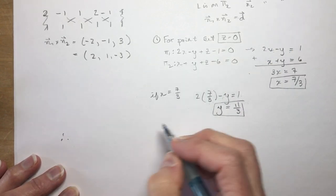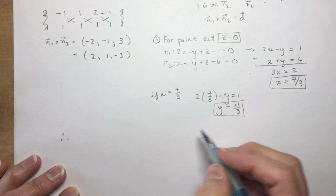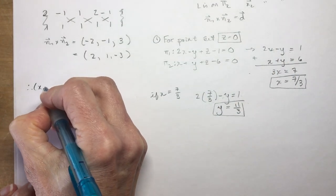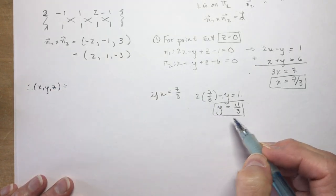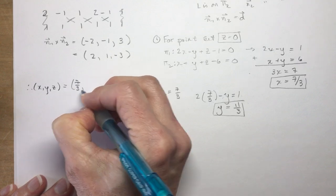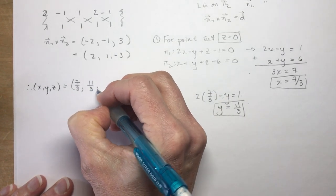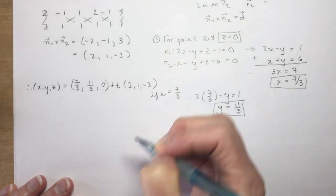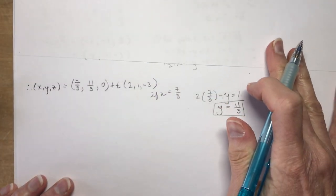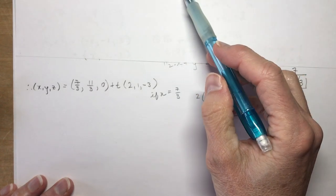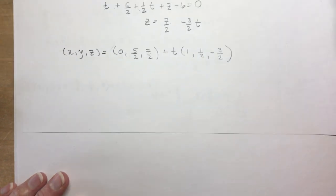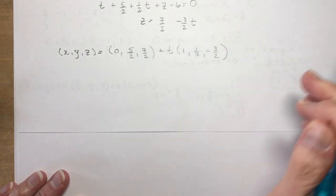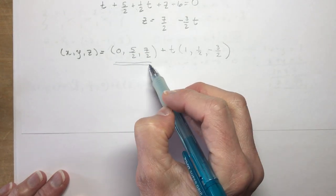There are many points on the line. The line equation is: (x, y, z) = (7/3, 11/3, 0) + t(2, 1, -3). Comparing to the first method's answer — point (0, 5/2, 7/2) with direction (1, 1/2, -3/2) — if I multiply the direction by 2 I get (2, 1, -3), the same direction. The points are different but both lie on the same line.